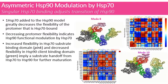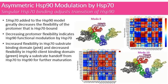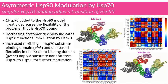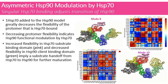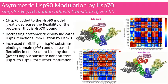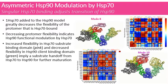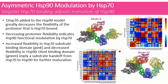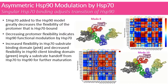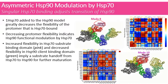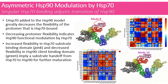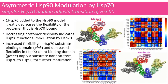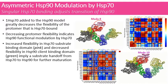The next model in this experiment is an asymmetric Hsp90-bound Hsp70 model. One Hsp70 added to the Hsp90 model greatly decreases the flexibility of the protomer that is Hsp70-bound. Decreasing the protomer flexibility indicates that Hsp90 is functionally modulated by Hsp70. This increased flexibility in the Hsp70 substrate binding domain, which is this pink domain, and decreased flexibility in the Hsp90 client substrate binding domain, which is this green domain, implies that a substrate handoff from Hsp70 to Hsp90 could be occurring for further maturation.